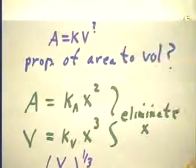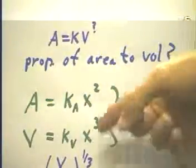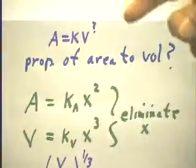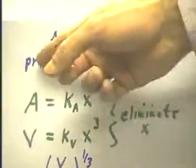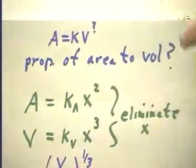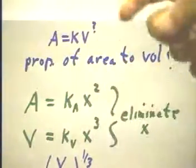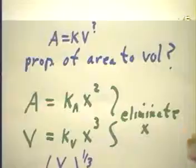We have a proportionality for area, we have a proportionality for volume, both in terms of the length of a side. We're not interested in anything about the length of a side, we're just interested in the proportionality of area to volume. So it makes sense to eliminate x between these two equations.